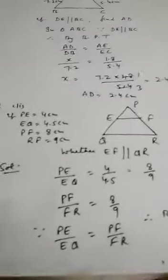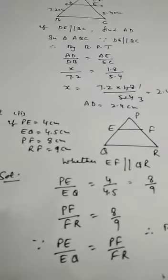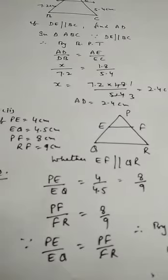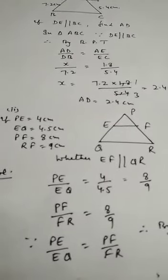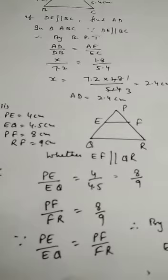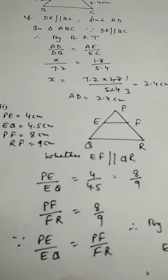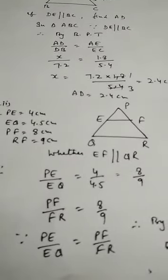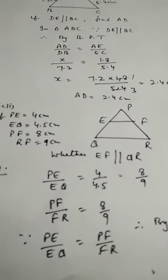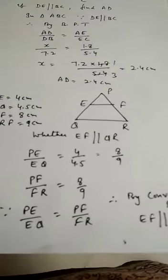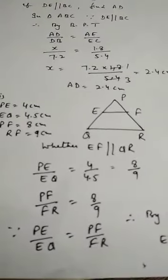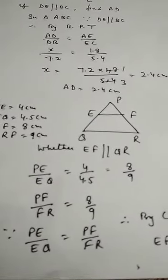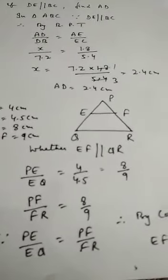Let's take the next question. In this figure, measurements are given: PE = 4, EQ = 4.5, PF = 8, and RF = 9. We need to check whether EF is parallel to QR. We check the ratios: PE by EQ is 4 by 4.5, which equals 8 by 9. PF by FR is already 8 by 9. Since PE by EQ equals PF by FR, by the converse of BPT, EF is parallel to QR.